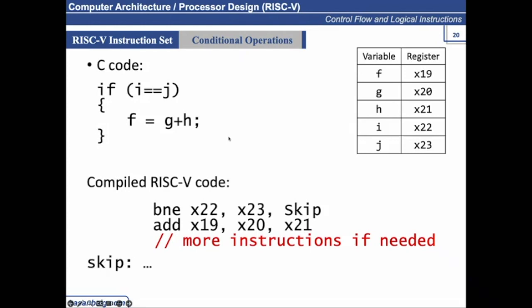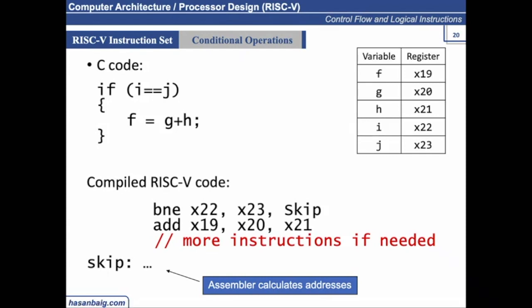x19, x20, and x21 correspond to f equals g plus h. The address of skip is calculated by the assembler — we do not need to worry about it. While writing the code, you write the label 'skip' and it will automatically be converted by the assembler.